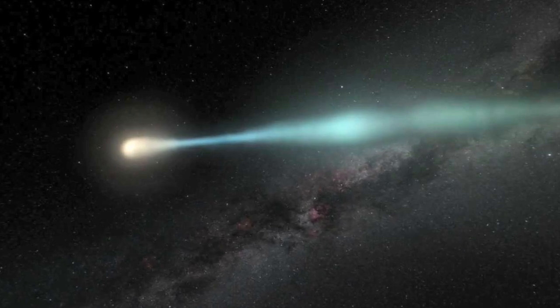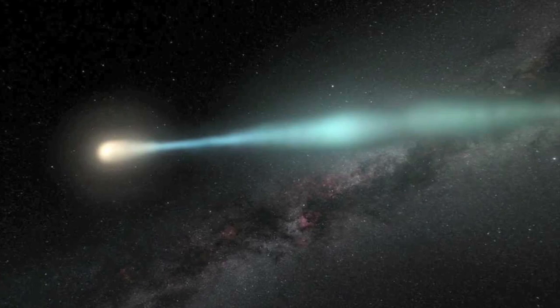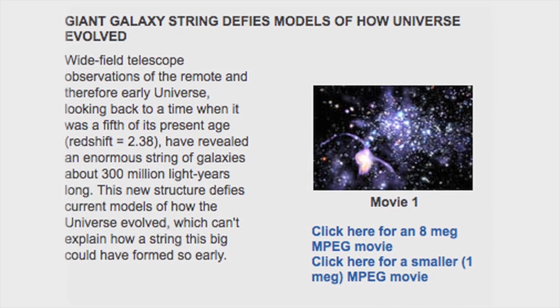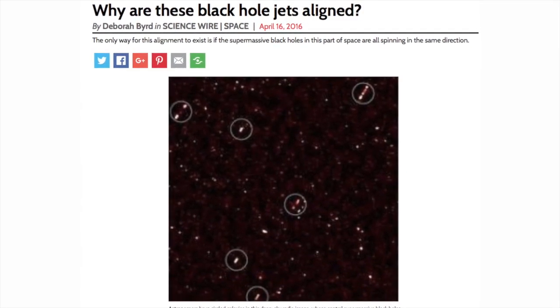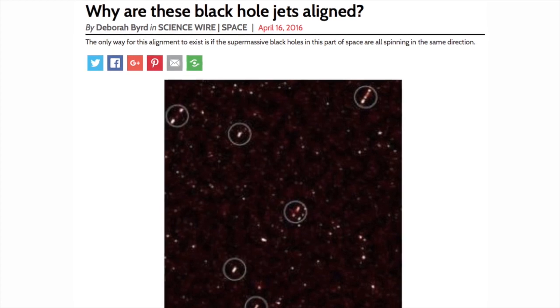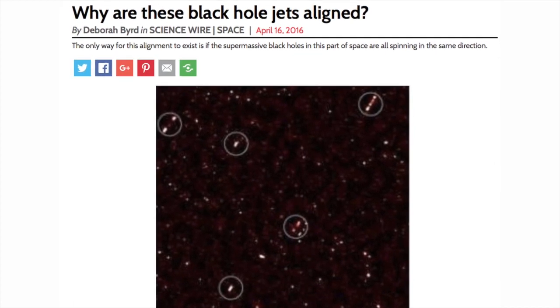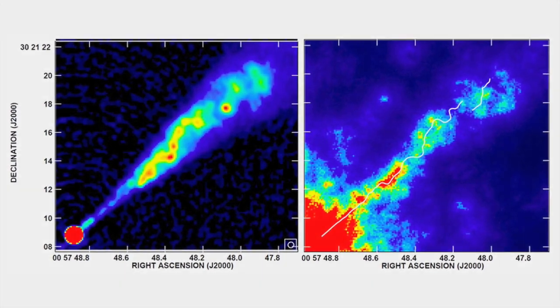Only electric fields can accelerate charged particles across interstellar space. Since Birkeland currents are filamentary, and since stars and galaxies occur in strings, the alignment of galactic jets observed by radio astronomers is not due to a coherent spin in the structure of this volume of space. It is due to the collimated nature of those electric currents.